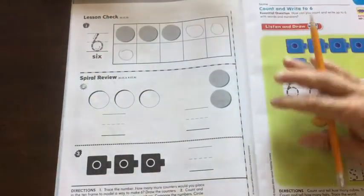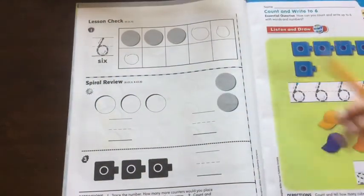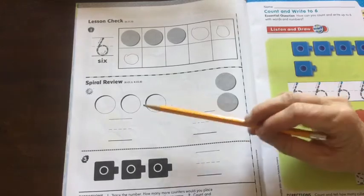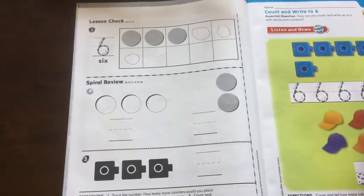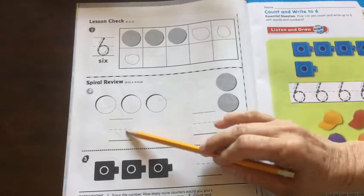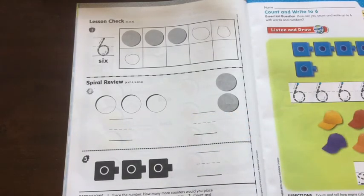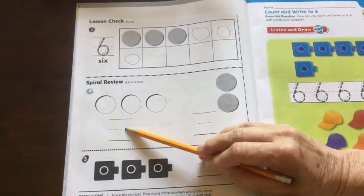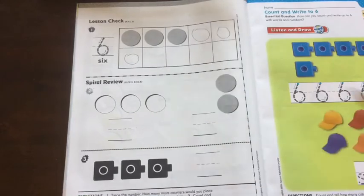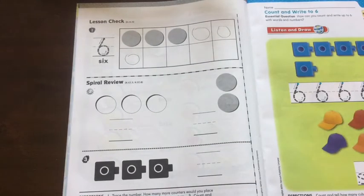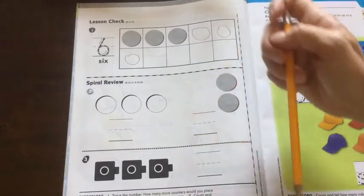Number 2. Here's our review. Count and tell how many in each set. Compare the number. Circle the number that is less. Remember, less means smaller. Less means menos. Count and write the number. Count and write the number. Circle the number that is less. Menos. Down here. We're going to count and write the number.